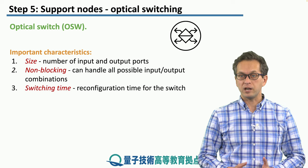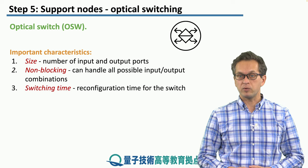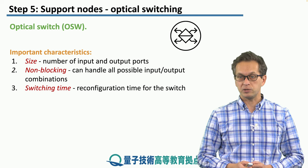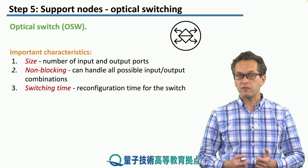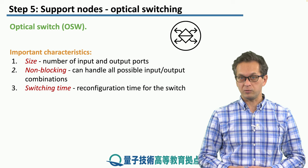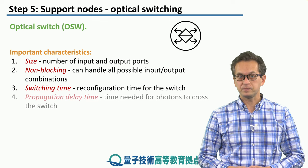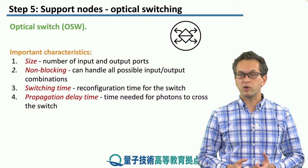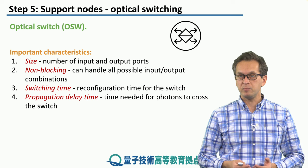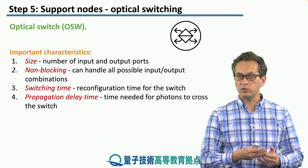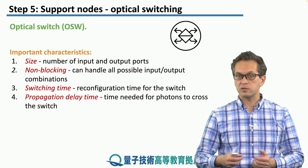The switching time is very important. This is how long it takes to reconfigure the switch. Faster switching times can improve the performance of our network. Number four is propagation delay time — this is simply the time it takes for the photons to cross the switch.